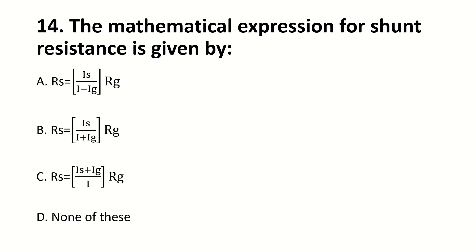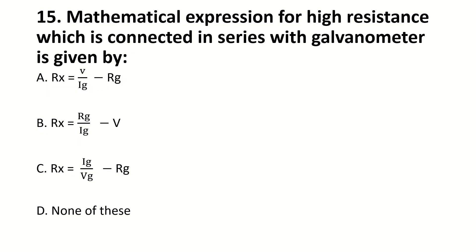The mathematical expression for shunt resistance is given by — blank. Right answer is A: Rs. The mathematical expression for high resistance connected in series with the galvanometer is given by — blank. Right answer is A: Rx equals V divided by Ig, minus Rg.